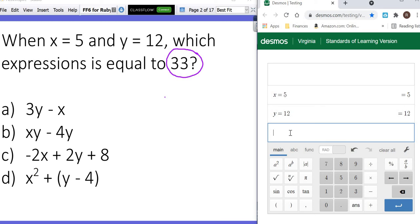So I'm going to start by typing 3y minus x. That's 31. So that's not it. So what I'm going to do, I'm going to highlight that and then backspace so that I don't erase too much. So now let's try b. xy minus 4y. That gives me 12. That's not what we want. So let's highlight and backspace. Okay, so let's try c.